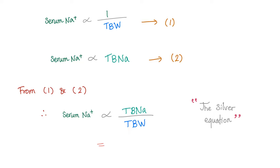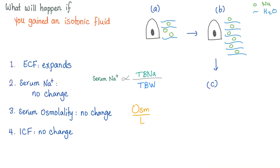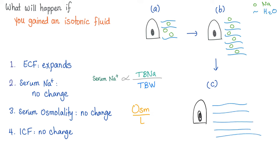Why not serum sodium equals total body sodium over total body water exactly? Because you need a constant: serum sodium equals a constant times total body sodium over total body water. That's basic math. What happened if you gained an isotonic fluid? We add equal amounts of water and sodium to the ECF. The extracellular fluid compartment expands.